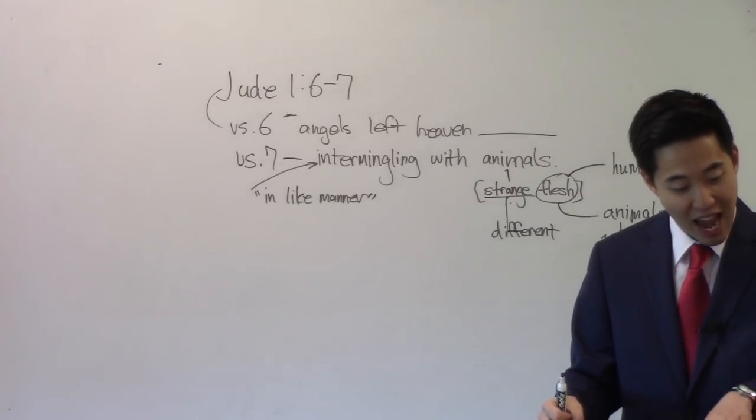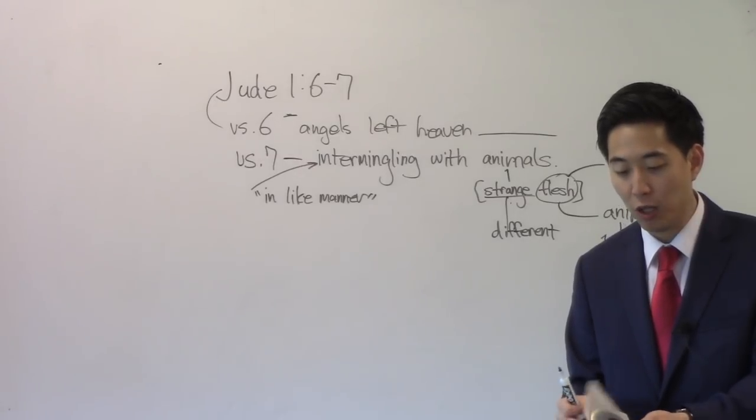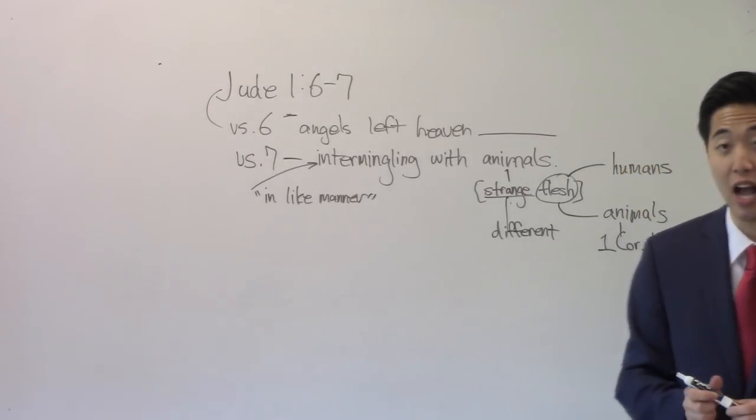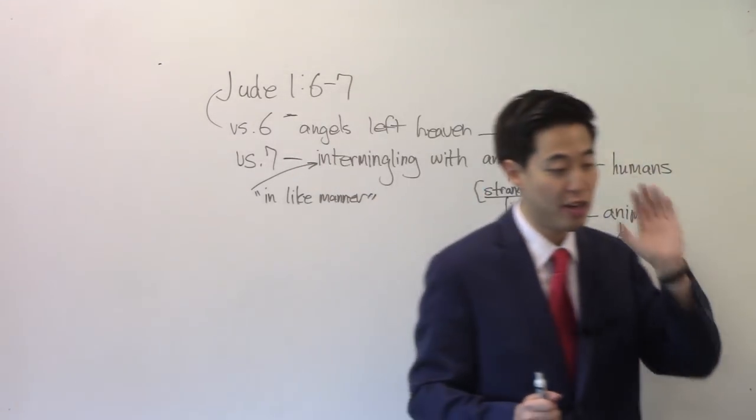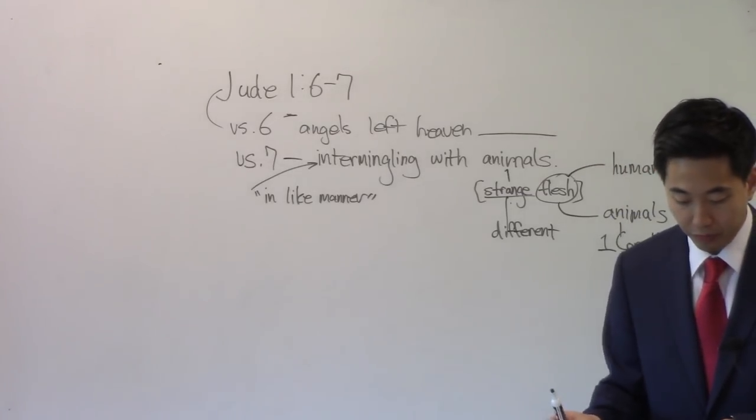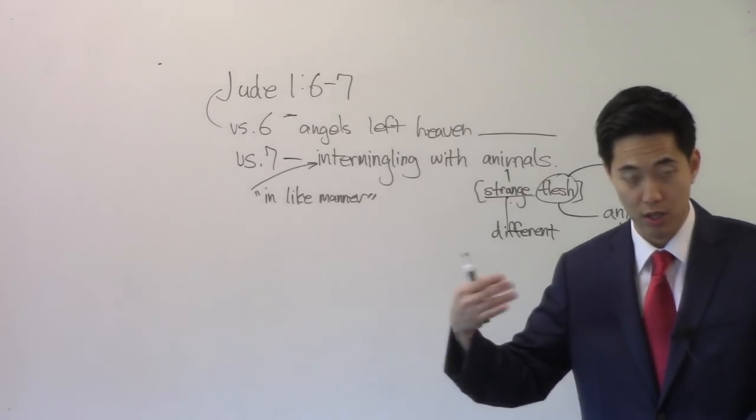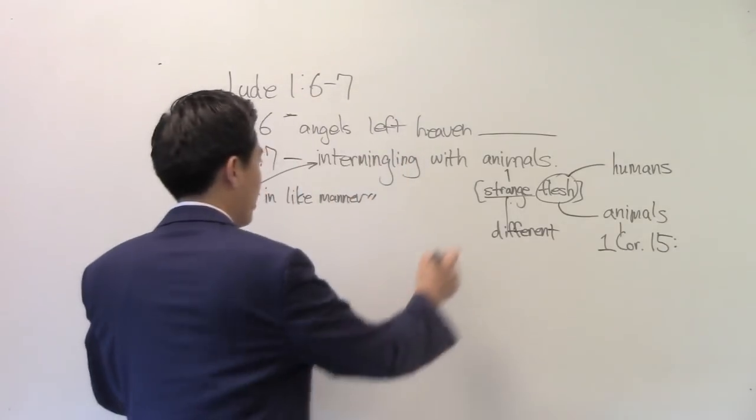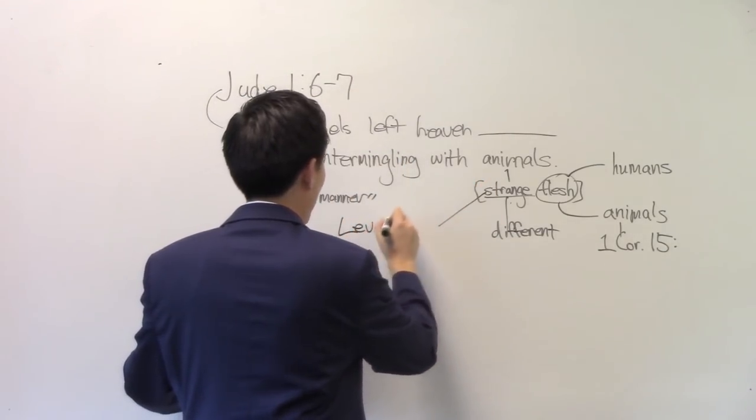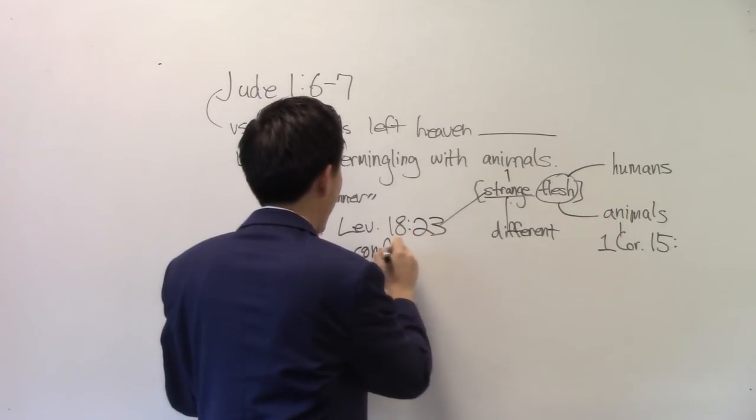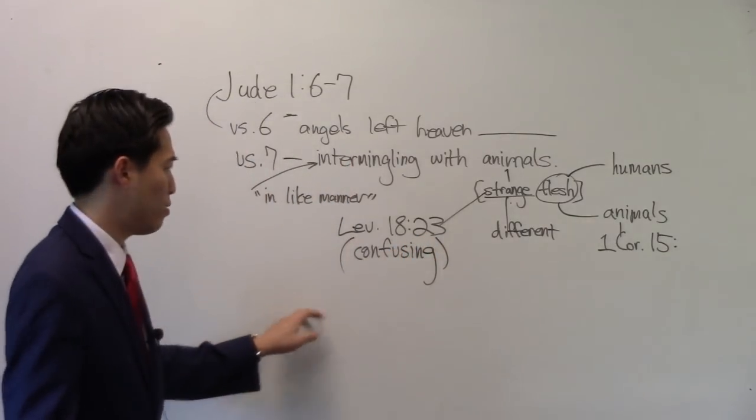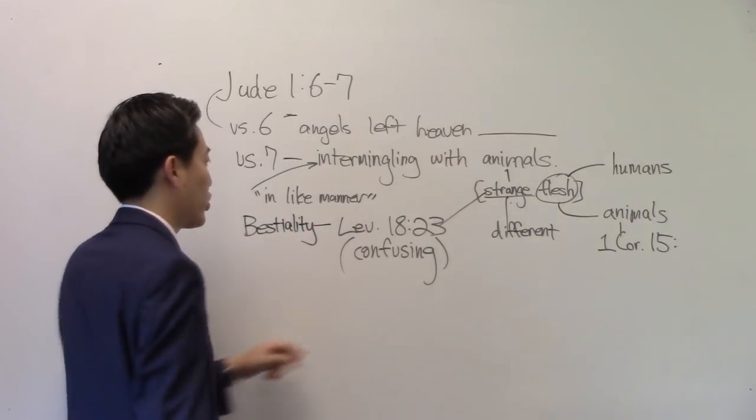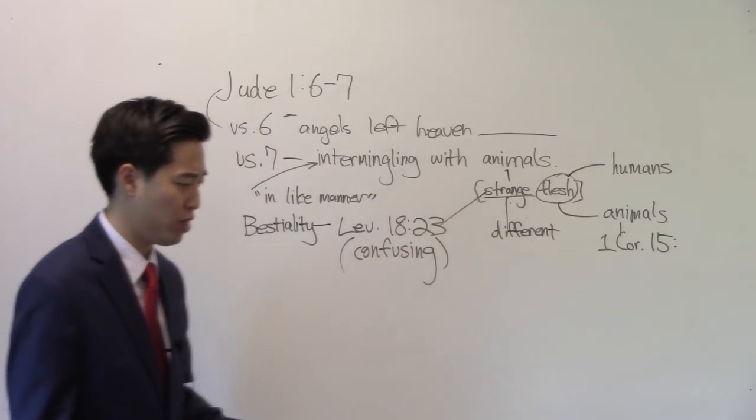Let's look at Leviticus 18. The Bible even called bestiality strange. Look at Leviticus 18:23. Neither shalt thou lie with any beast to defile thyself therewith. Neither shall any woman stand before a beast to lie down thereto. It is confusion. See that? The Bible even showed bestiality is confusing, strange.